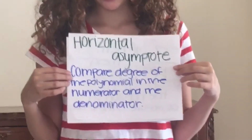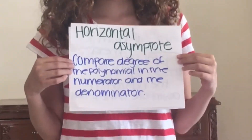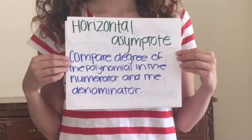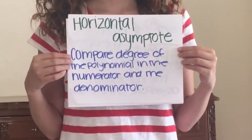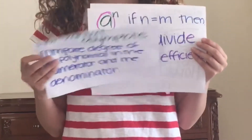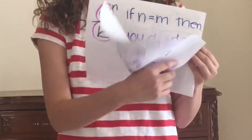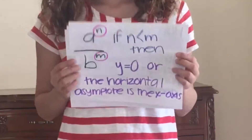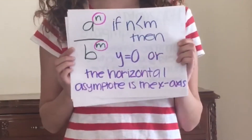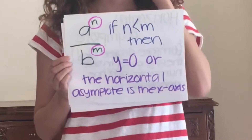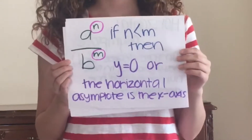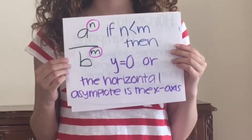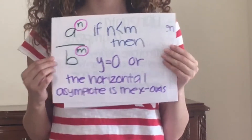The horizontal asymptote. To get the horizontal asymptote, we need to compare the degree of the numerator to the degree of the denominator. There are three ways to do it. If the degree of the numerator is smaller than the degree of the denominator, then y is equal to zero, or the horizontal asymptote will be on the x-axis.